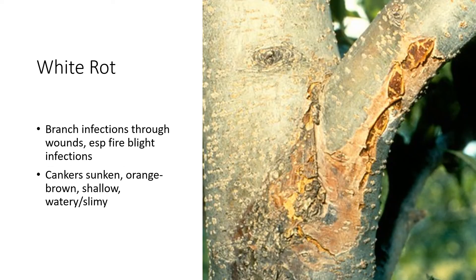With both rots, but particularly White Rot, the canker will cause branch infections. Infection occurs through wounds, especially fire blight infections. These are opportunistic, weak pathogens — both of them — that enter woody tissue through some type of opening or wound. White Rot is notoriously introduced to plants through fire blight infections. The cankers are typically sunken, orangey-brown, and usually pretty shallow — they can be slimy or water-soaked. So it usually stays on the surface, not a deep wound.